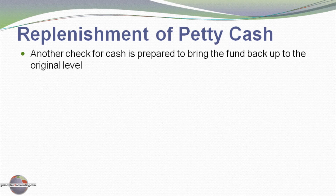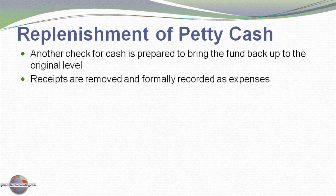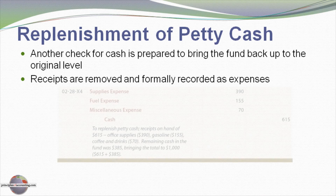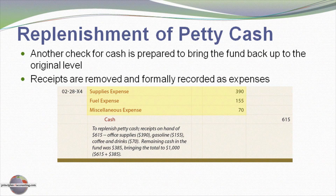Let's turn our attention to the replenishment of the petty cash fund. Whenever a fund needs to be replenished, another check is made out to cash, taken to the bank and cashed. The amount of that check is the amount necessary to bring the fund back up to its original level, which should correspond to the receipts in the box. The receipts are removed and formally recorded as expenses. Here I'm assuming we needed to replenish the petty cash fund $615. That money is placed into the fund; the receipts are taken out for supplies, fuel, and miscellaneous costs, and those expense accounts are appropriately debited.